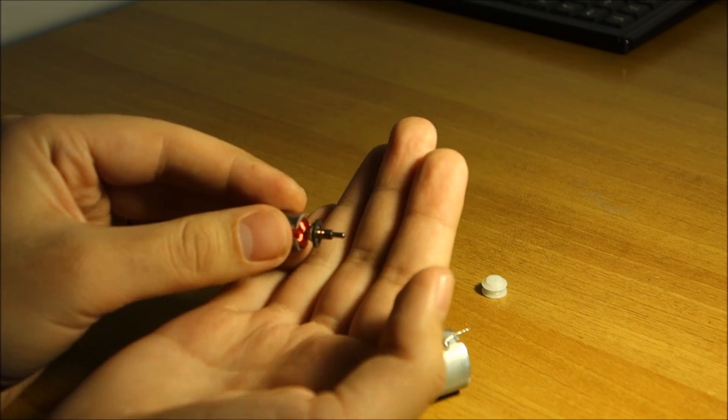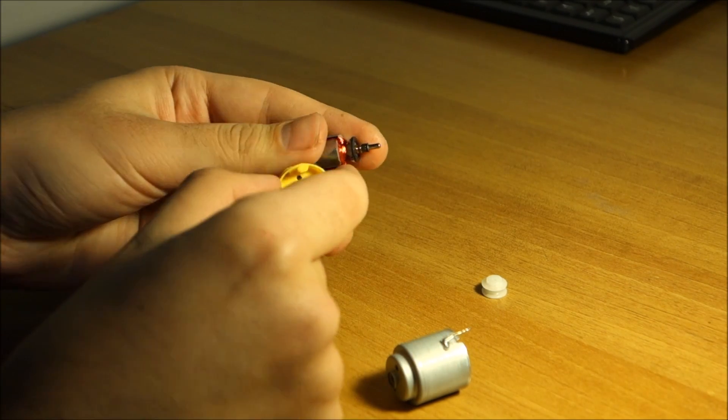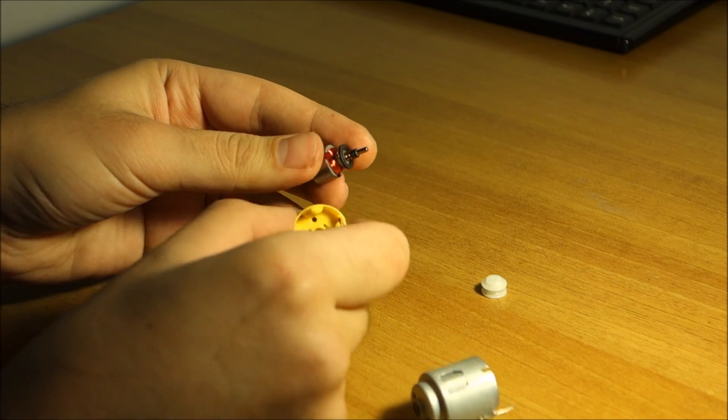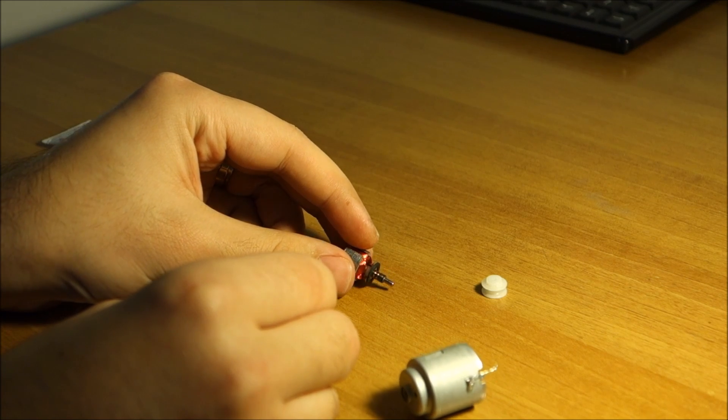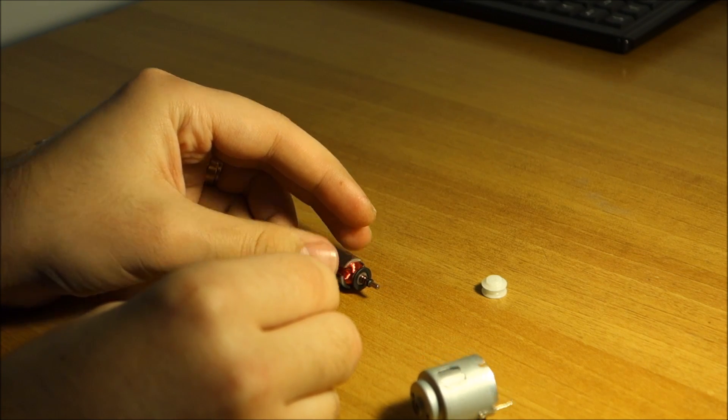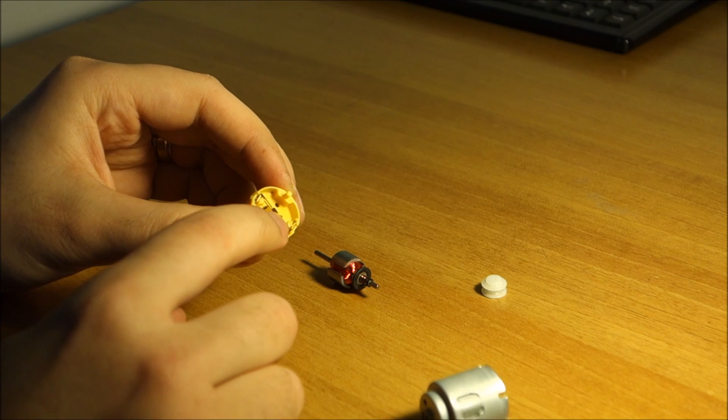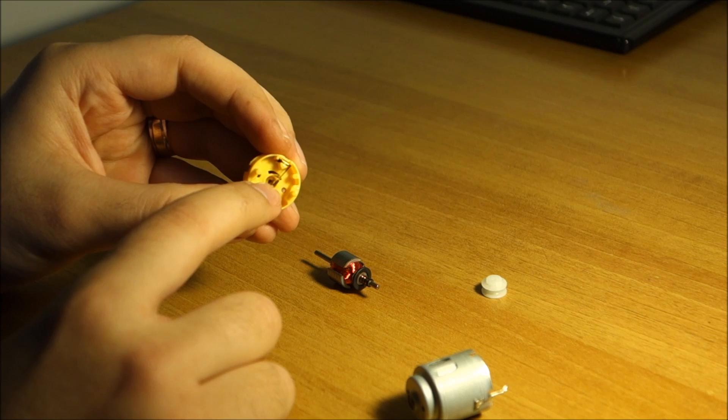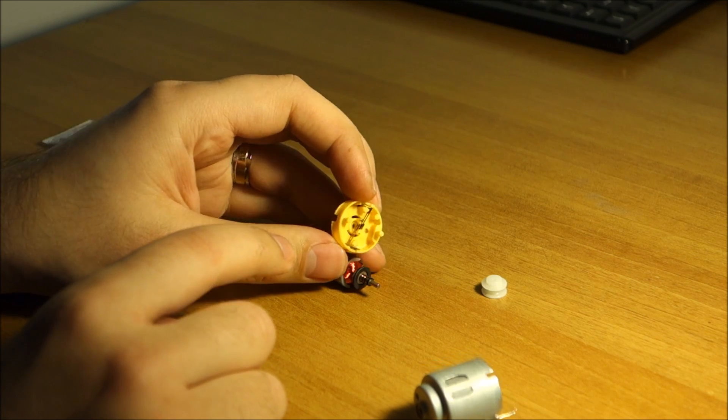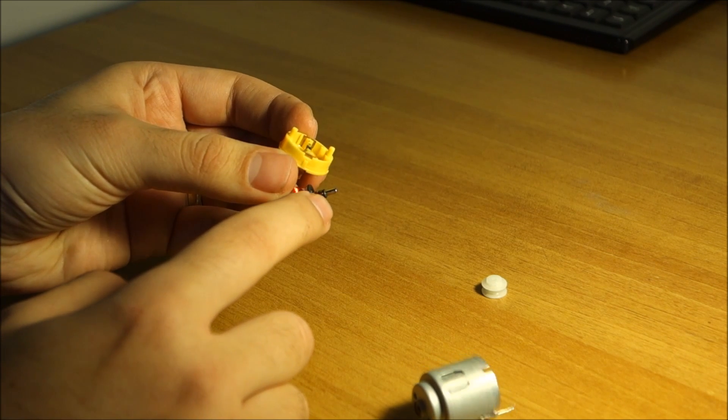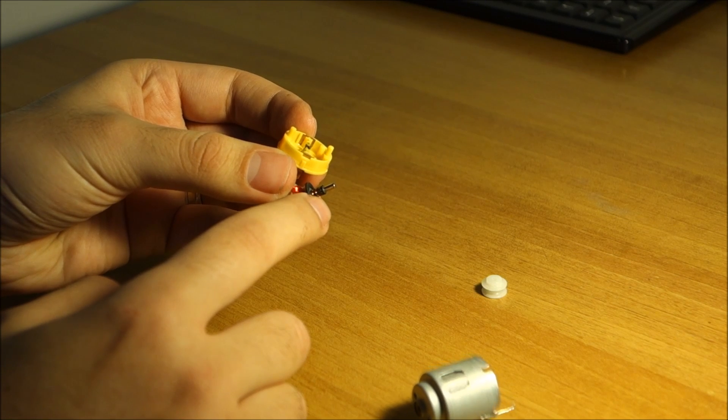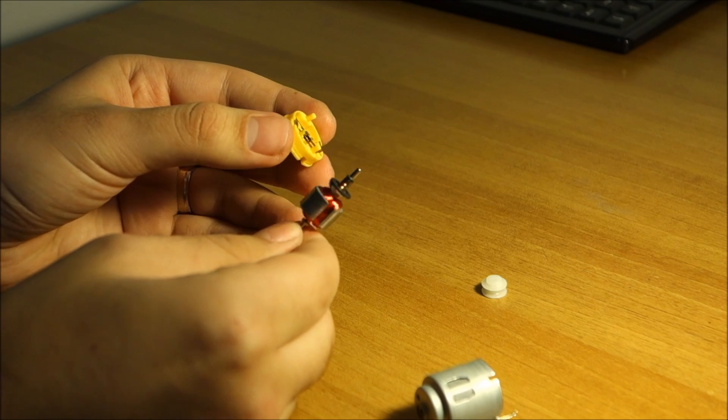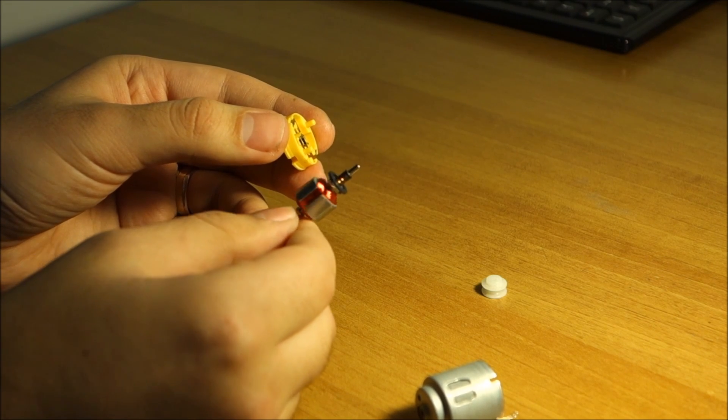Hopefully you can see there are some marks on it. Well, those tiny grooves were made by this. So what you want to try and do now is find a way so these tiny contacts do not touch the collector in exactly the same grooves.